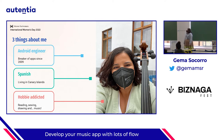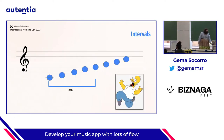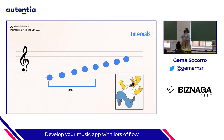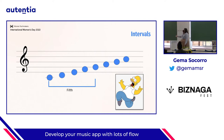One of the first things you have to learn when you are learning how to play an instrument or music theory is how to recognize an interval. An interval is the gap that can exist between two notes. For example, here we have the C major scale, which is the scale that we all learn in school. A fifth interval, for example, you can find it between the C and G note. And as part of music theory, you have to learn to recognize them by ear.